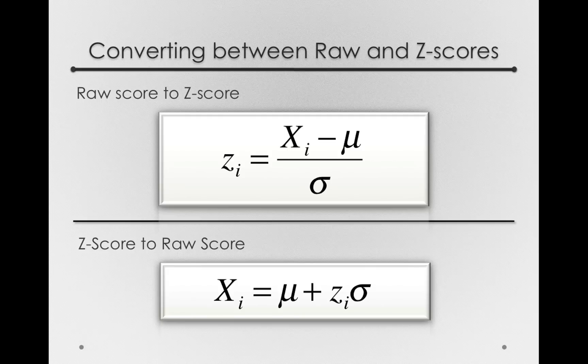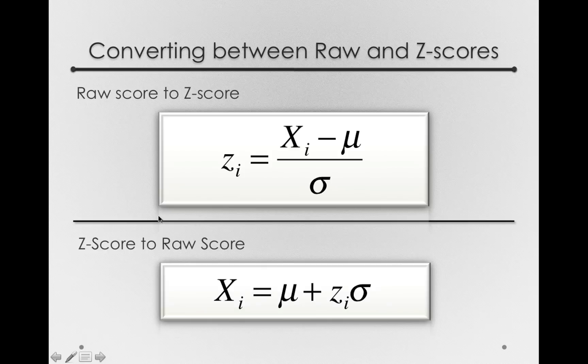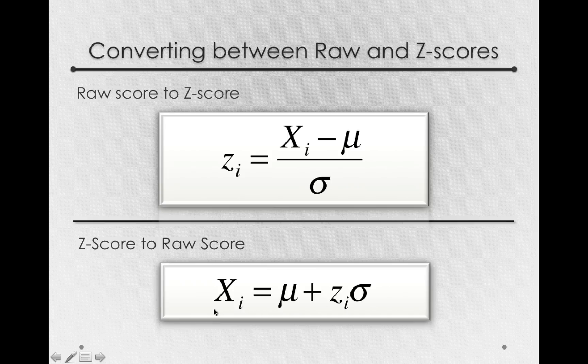For instance, if I tell you a distribution has a mean of 100 and a standard deviation of 15, something typical for the IQ distribution, and then I tell you that your z-score is positive 1, you can simply take 100 plus 1 times 15 to get a raw score of 115.